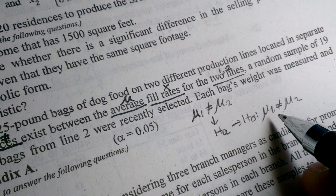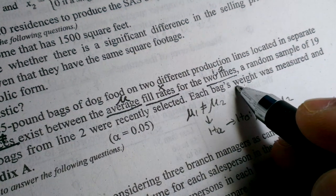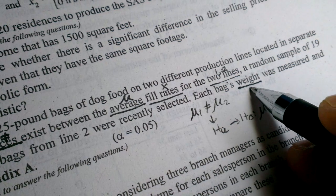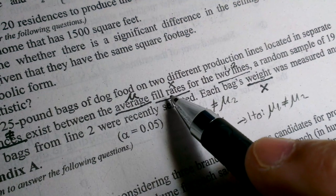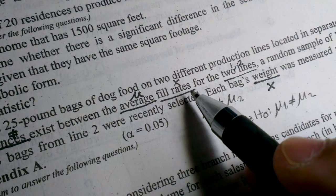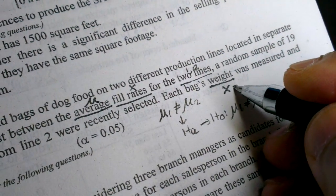What are the particulars? Each bag's weight was measured. So variable name, label, or fill rate or weight. This is a test variable, dependent variable.